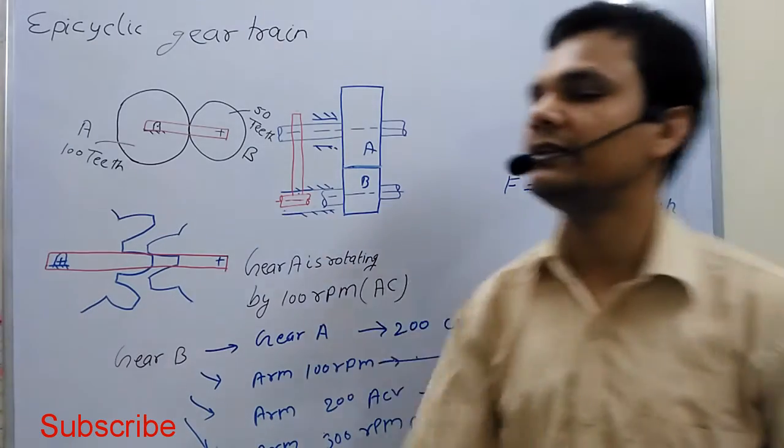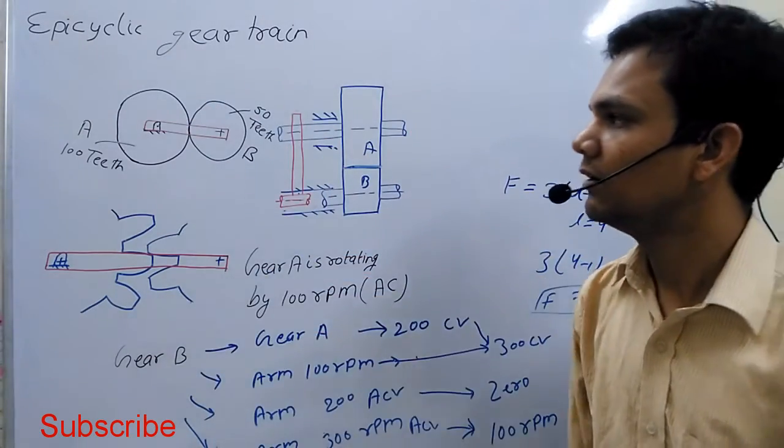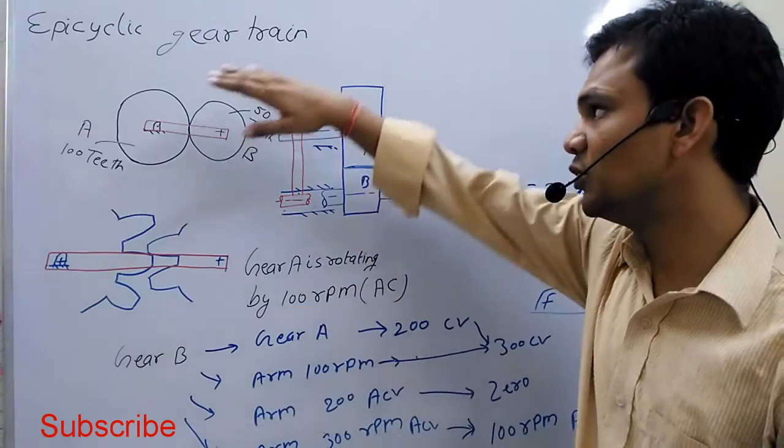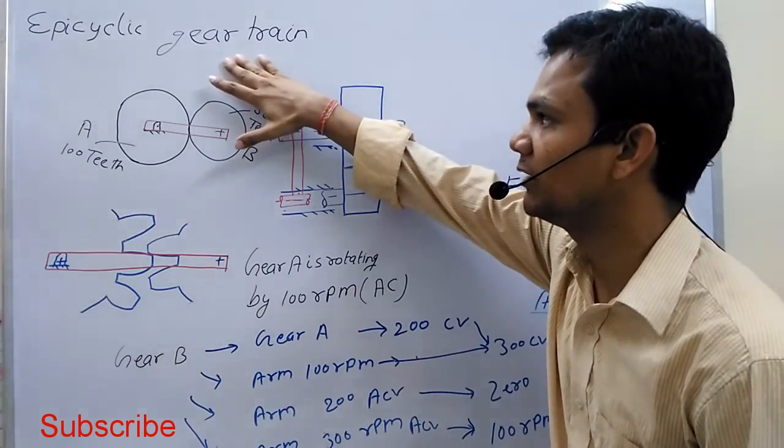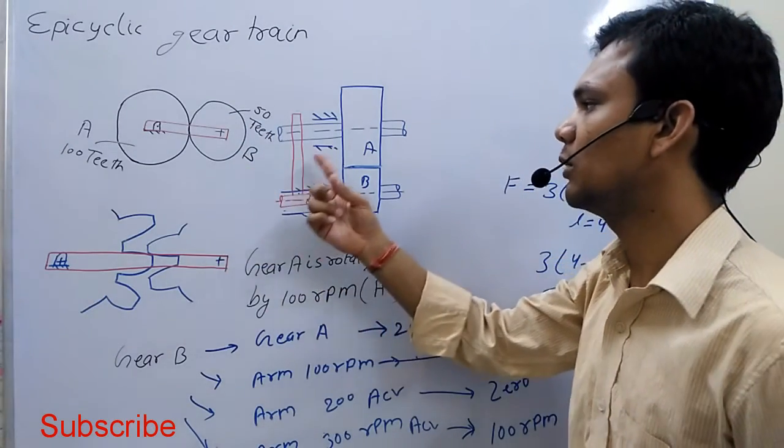That is one of the gears and the arm, to obtain more than one gear ratio in the epicyclic gear train. This is about epicyclic gear trains. In the next lectures, I'll give you examples of how to calculate the rpm of the gear or arm.